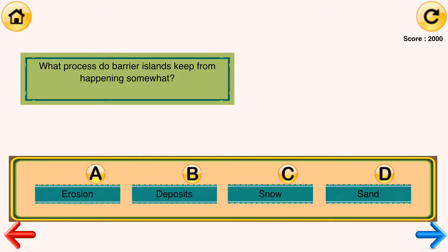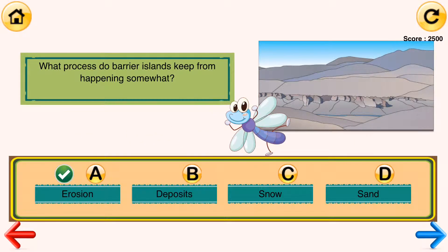What process do barrier islands keep from happening somewhat? Erosion, deposits, snow, or sand? The answer is erosion.